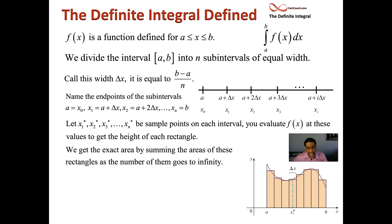So we get the exact area by summing the area of these rectangles. There's n of them and we want the number of them to go to infinity. This is calculus. So what do we do when things go to infinity? We do a limit. So the definite integral of f of x from a to b is defined. The definition is this right here.